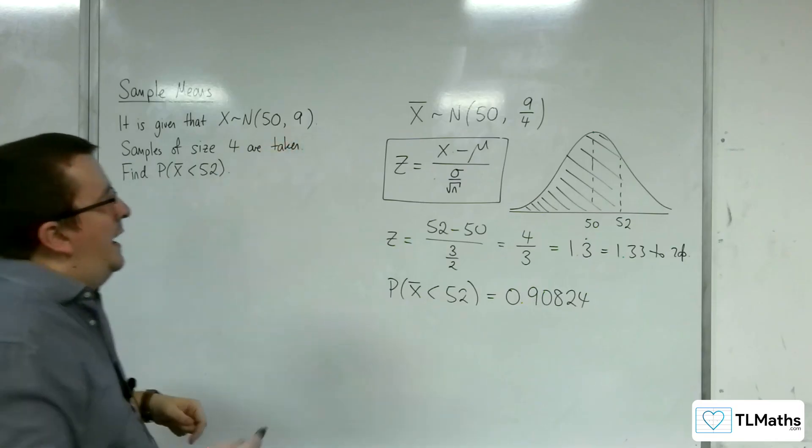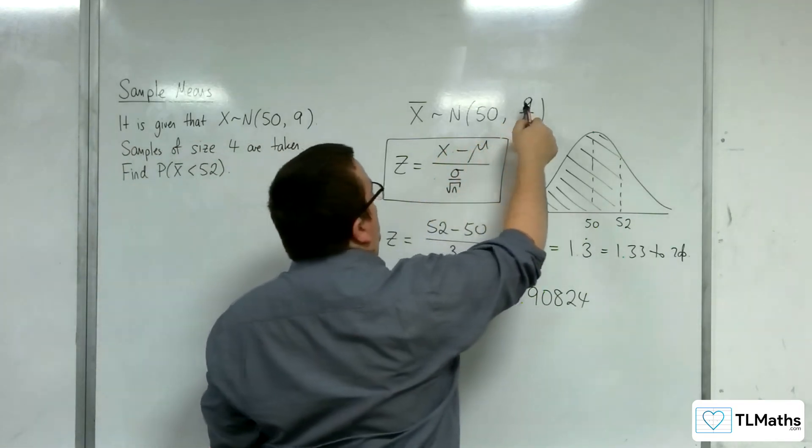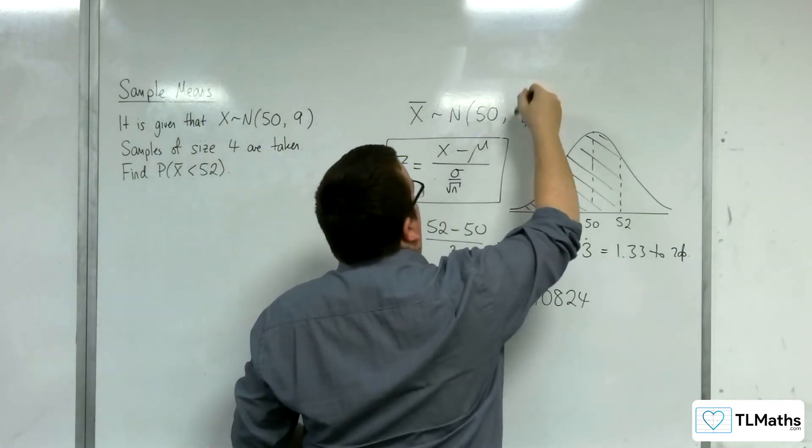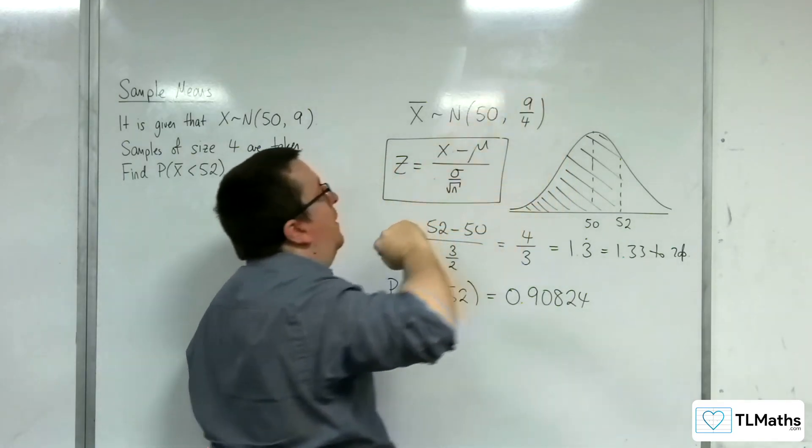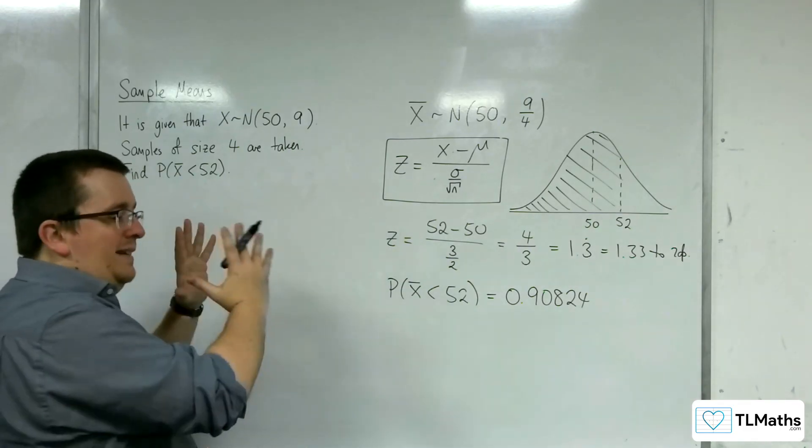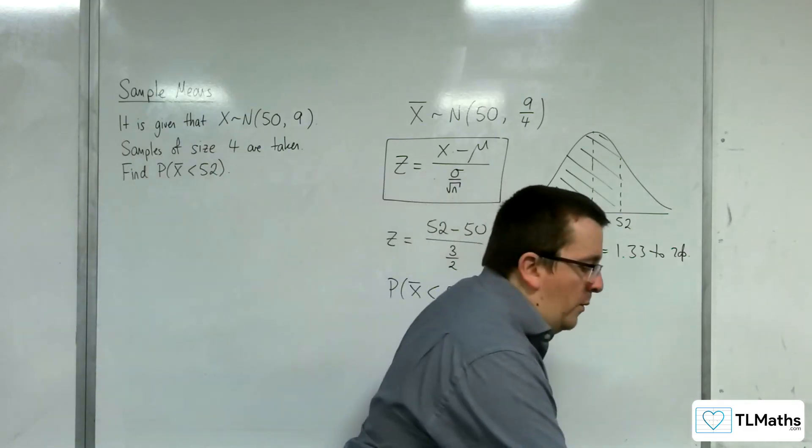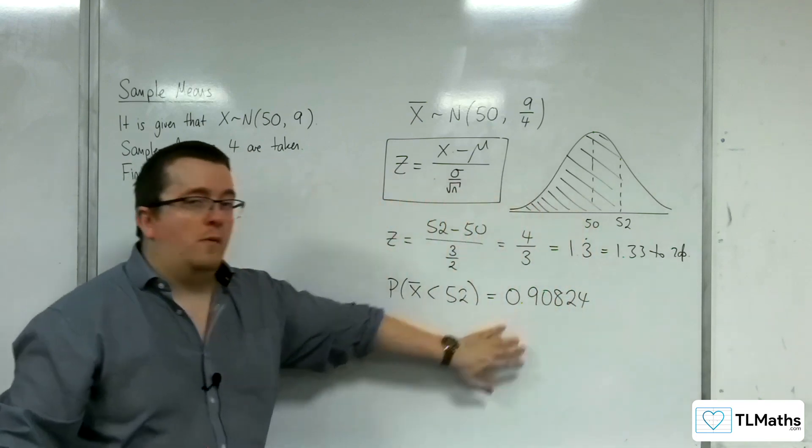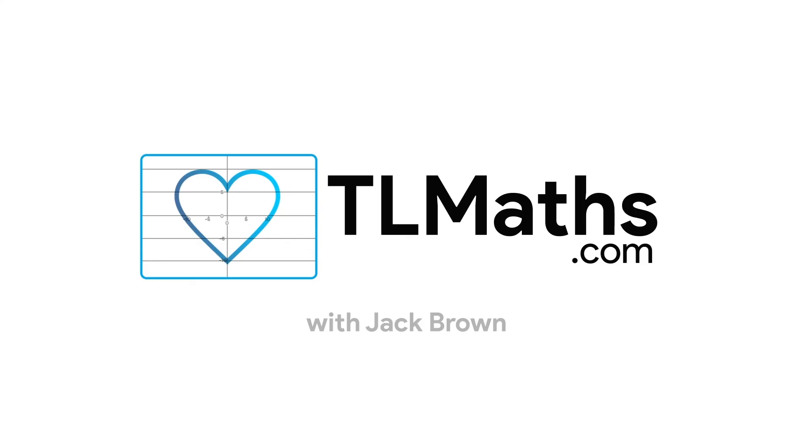So it's been shrunk down to 3 over 2, 1.5, because of taking sample size 4, which has compacted it in. That's why we're getting a fairly large probability here. Thank you.